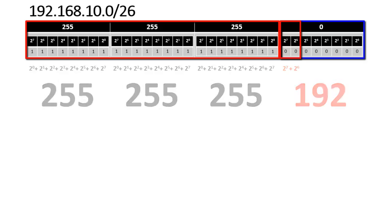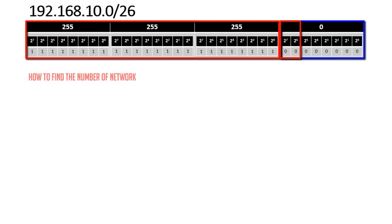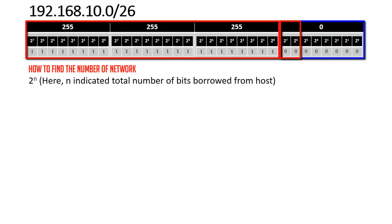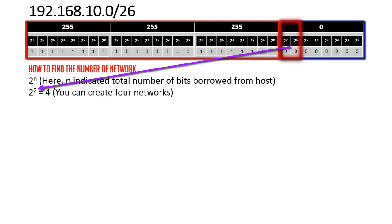Now let's find the number of networks using the formula 2^n, where n is the number of bits borrowed from the host. Since we borrowed 2 bits, 2^2 = 4, meaning you can create 4 networks.